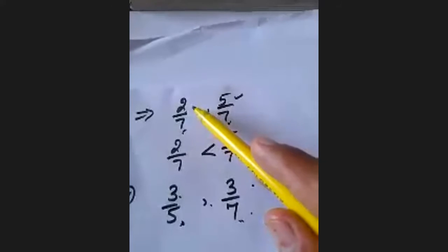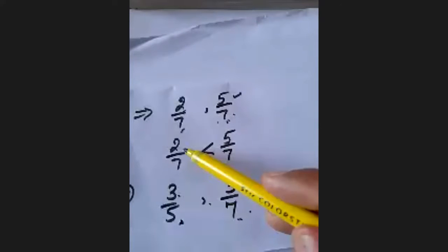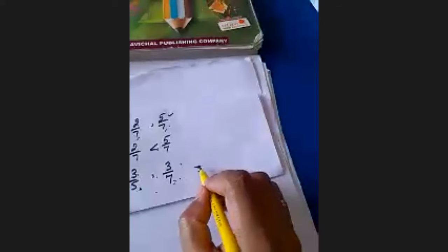In the first example, 2 upon 7 and 5 upon 7 — denominator is same, so just compare the numerators and put the sign: 2 is less than 5. In the second example, 3 upon 5 and 3 upon 7, the numerator is the same, so compare the denominators: 5 and 7. But in the second case, the result will be opposite. So 3 upon 5 is greater than 3 upon 7, because the smaller number is in the denominator.